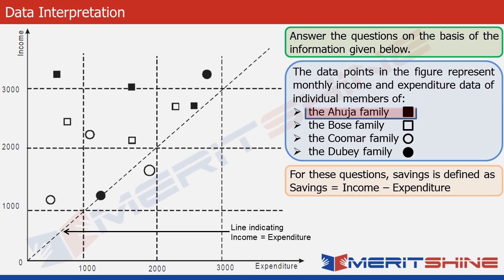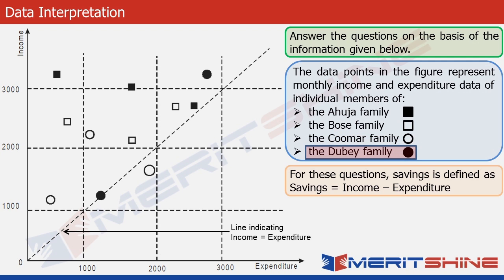Likewise, the Bose family is represented by white squares, with three members. The Kumar family is represented by white circles, again three members. And the Dube family is represented by black circles, with just two members.